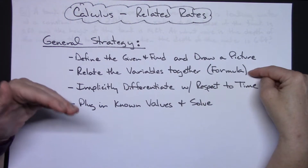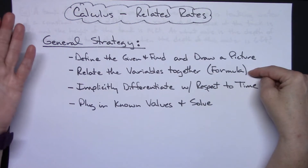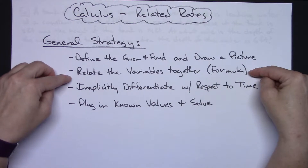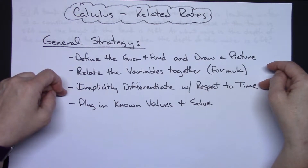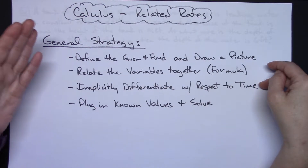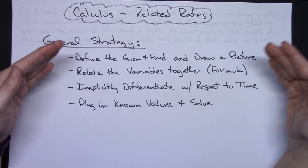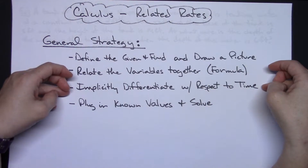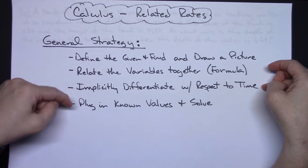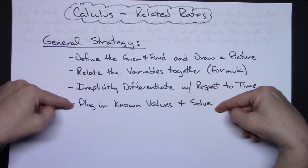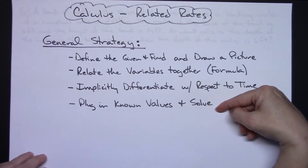If you're dealing with a cone it'll be the volume of the cone; if you're dealing with a cylinder it might be the surface area of the cylinder, or a perimeter of a fence or an object along those lines. You're then going to implicitly differentiate with respect to time, because in related rates problems you're usually asked to find a rate at a given point in time and there's probably going to be another rate given somewhere else in the problem. Then you should simplify your equation, plug in your known values, and solve to answer the question.